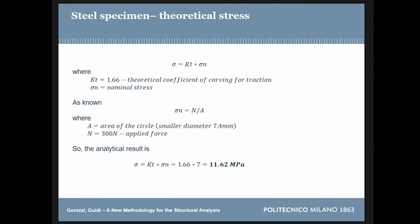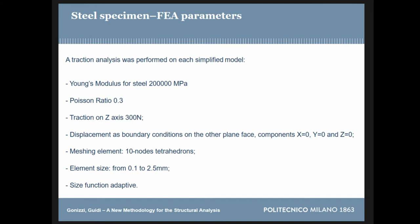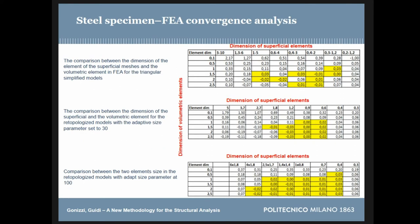For the steel specimen, the theoretical stress is 11.62 MPa. We did a convergence analysis and found that using the adaptive size parameter at 100 gave the best results. An important finding was that it is critical to match the size of the volumetric mesh element close to the size of the surface elements of the mesh.